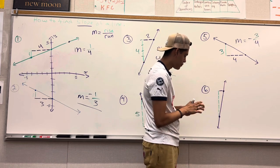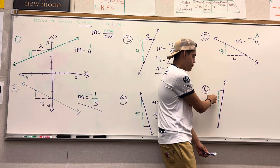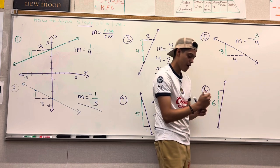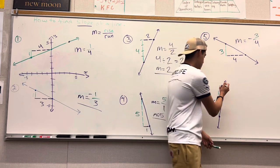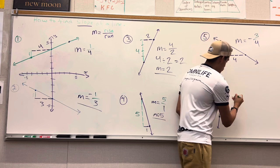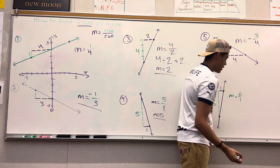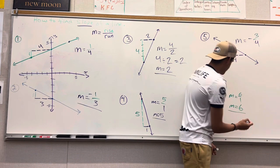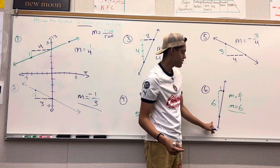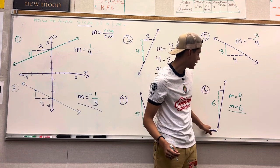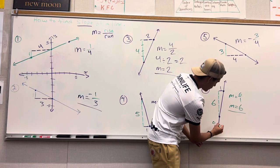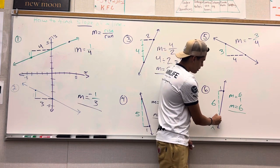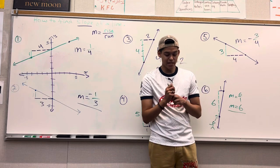Now lastly, number six. We have one, two, three, four, five, six — six dash marks going up, and then one dash mark going to the right. Your slope would be six over one, and you would end up getting — put that into your calculator — M equals six. You see that it is positive because you are going uphill. It is a very steep line, but you are going uphill. Think of it: if you have a person on the left, you are going to the right and climbing a very steep hill. So that is basically finding the slope of the line.